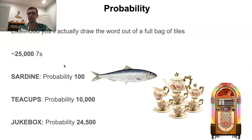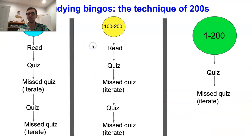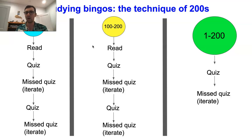So if you can just master the high probability words, that'll really send your ability and ratings skyrocketing. Now let's discuss how we use this concept in practice to maximize the efficiency of our bingo study. On this slide, I have the specific technique I actually used when I was studying bingos, basically all the way from the beginning before I'd studied a single bingo, all the way to the end when I finished out all of the seven and eight letter words.